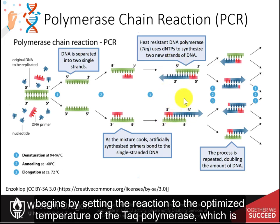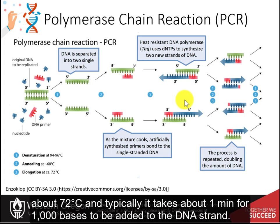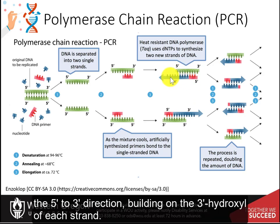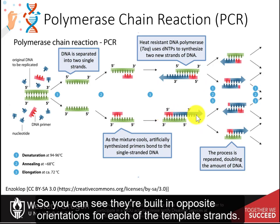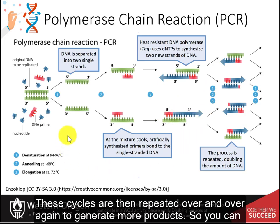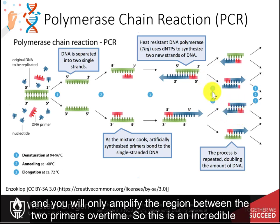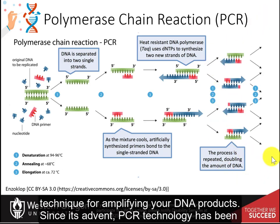The elongation phase begins by setting the reaction to the optimized temperature of the Taq polymerase, which is about 72 degrees Celsius. Typically, it takes about one minute for a thousand bases to be added to the DNA strand. During the elongation phase, the DNA polymerase will introduce new nucleotides in the 5' to 3' direction, building on the 3' hydroxyl of each strand. You can see they're built in opposite orientations for each of the template strands. These cycles are then repeated over and over again, and with each round you get exponential increases in your gene of interest, amplifying only the region between the two primers.